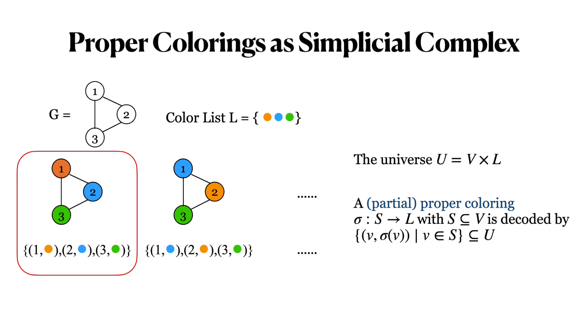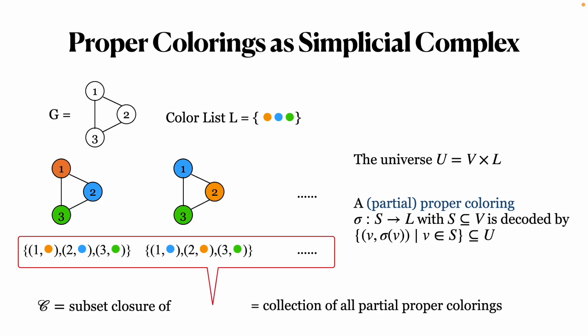And 3 with green. We define the simplicial complex C to be the subset closure of such sets, and it is exactly the collection of encoding of all partial colorings.